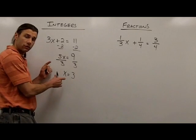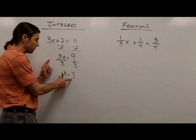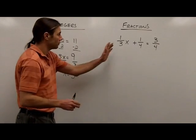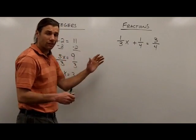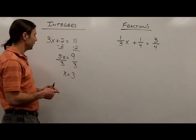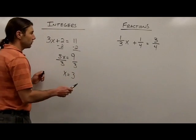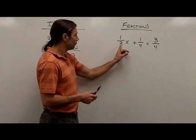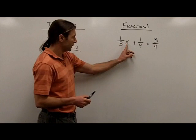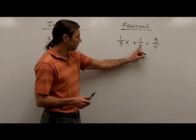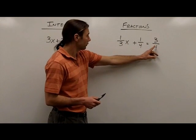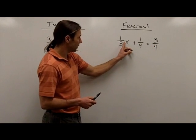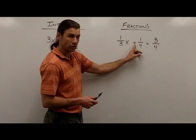So there I am solving this equation with integers. Now the equation that contains fractions is going to be solved almost the same way. Notice in my fraction example, I have 1/3 times x plus 1/4 is equal to 3/4. So I have both multiplication and addition, very similar to the integer problem.